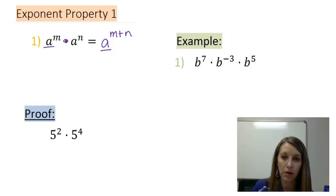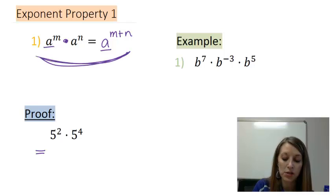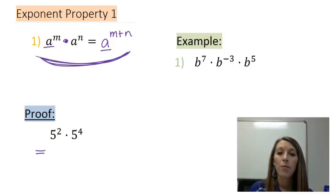So I have an example here, five squared times five to the fourth. And by my proof, I'm going to write this out in long form. Now I definitely don't expect you to do this on your homework because that's why we're introducing these properties to show you the short way to do it.